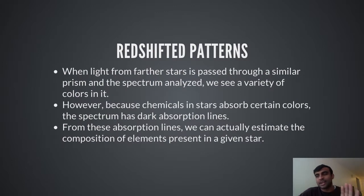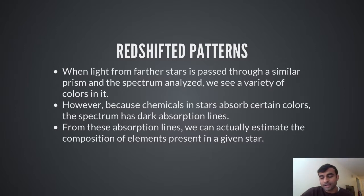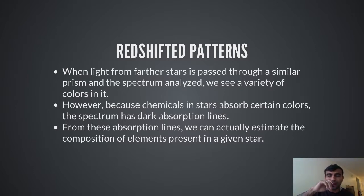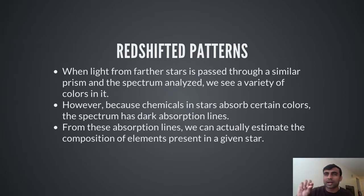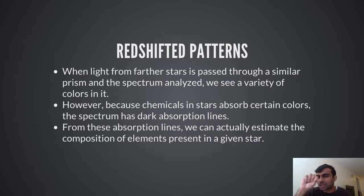But this was not the only thing Edwin Hubble discovered. There was another great discovery: the red-shifted pattern. When light is passed through a prism, as Newton showed, it is composed of a spectrum — red, green, blue. Similarly, when light from stars is passed through a prism you can see its spectrum. Depending on the elements present in the star, certain wavelengths of light are absorbed, creating dark bands called absorption lines. From these absorption lines you can find out the chemical composition of the elements present in stars.